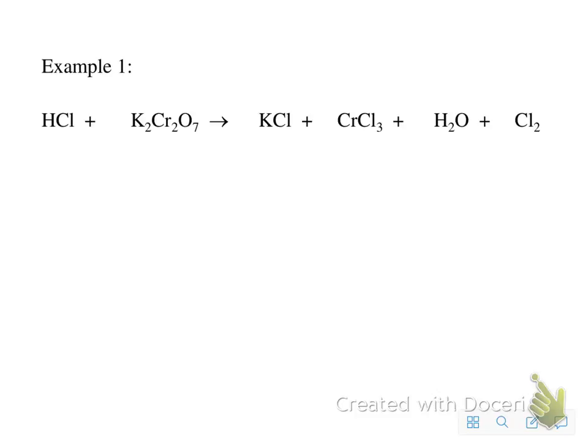First I need to identify my elements that have changed. Here I've got chlorine by itself, so chlorine is something different here. Chlorine is going from minus 1 to Cl2, so I'm going to put 2 here as a 0. So I need 2 electrons here.